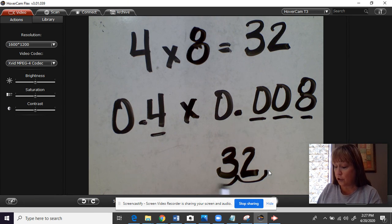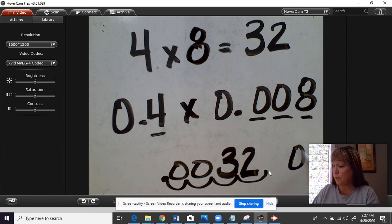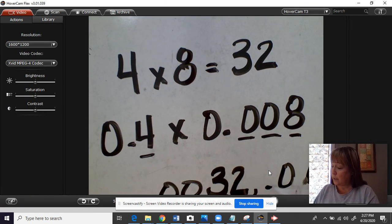So 1, 2, 3, 4. Put our decimal right here, fill it in with zeros. And if you rewrote it, 0.0032.